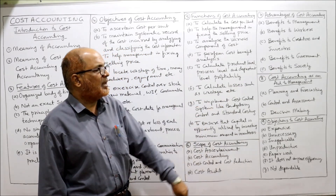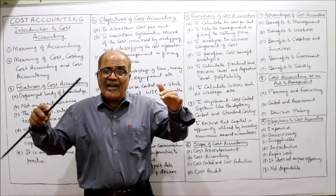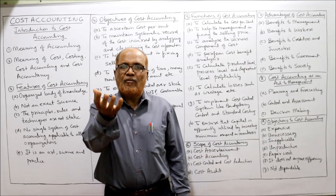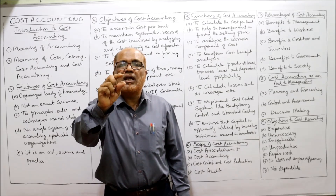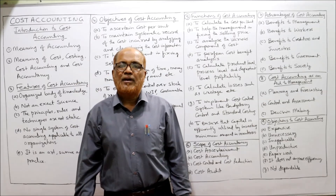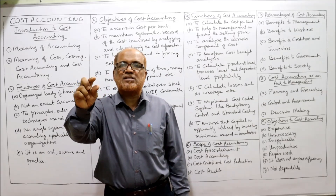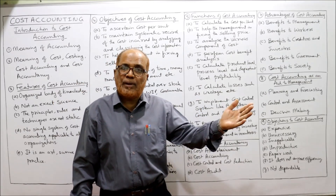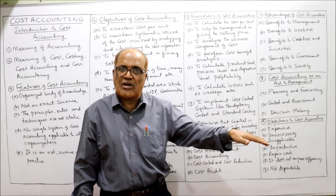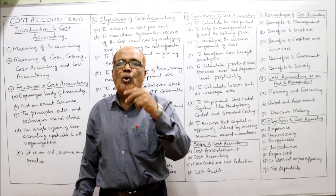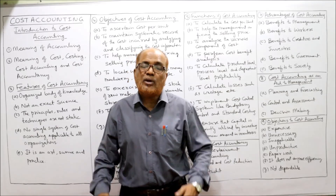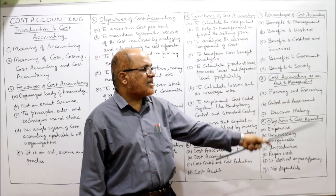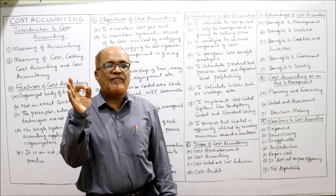Benefits to society: when a company implements cost accounting, costs are reduced. When cost is reduced, a reasonable price can be fixed and goods become available to customers and society at a lower price. So if a company implements cost accounting and the cost of production comes down, it will be available at a lower price to society — even society gains from cost accounting.